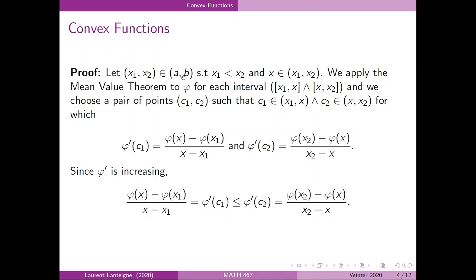Let the pair x1 and x2 be in the open interval (a, b) such that x1 is less than x2, and let x be in the open interval (x1, x2). If we apply the mean value theorem to phi on the closed intervals [x1, x] and [x, x2], we choose points c1 in the first interval and c2 in the second such that the derivative of phi at c1 equals (phi(x) minus phi(x1)) divided by (x minus x1), and the derivative of phi at c2 equals (phi(x2) minus phi(x)) divided by (x2 minus x).